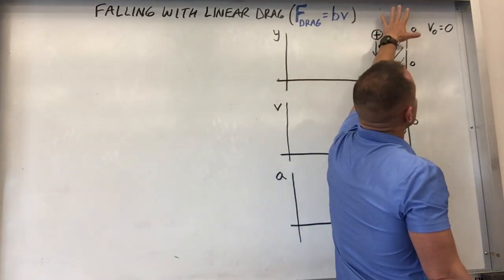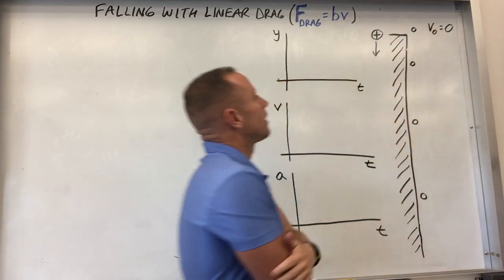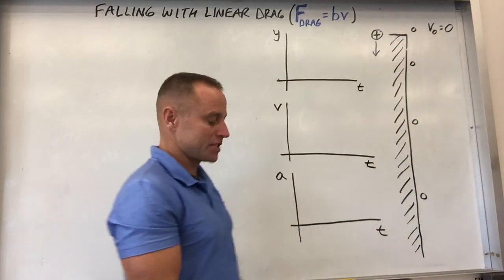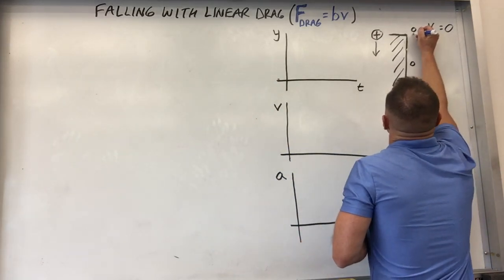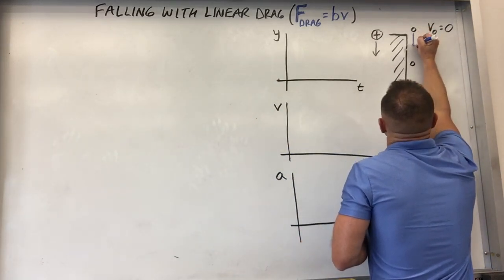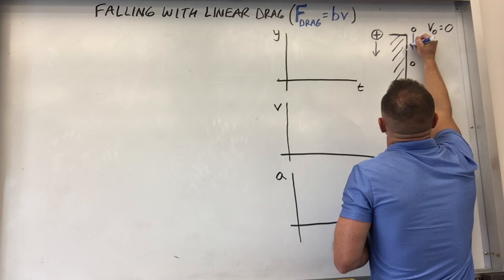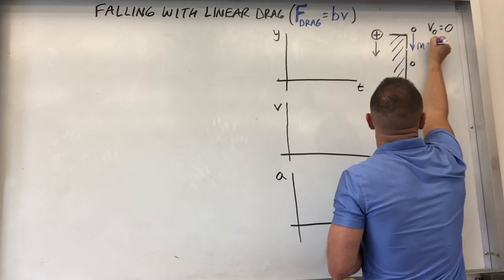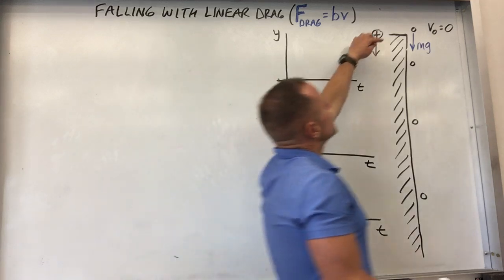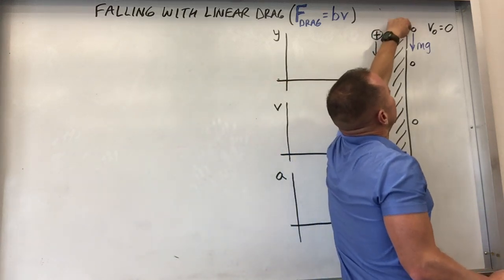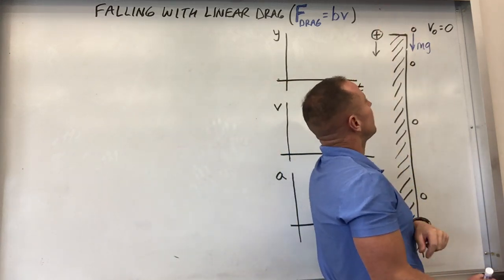So the idea is that you just drop something and we're actually going to let it fall with this kind of a drag force acting on it. So when you first let it go, all that's acting on it is the force of gravity downwards, mg acting down on this thing. The thing's not moving yet, so the drag force hasn't really developed yet at this point.